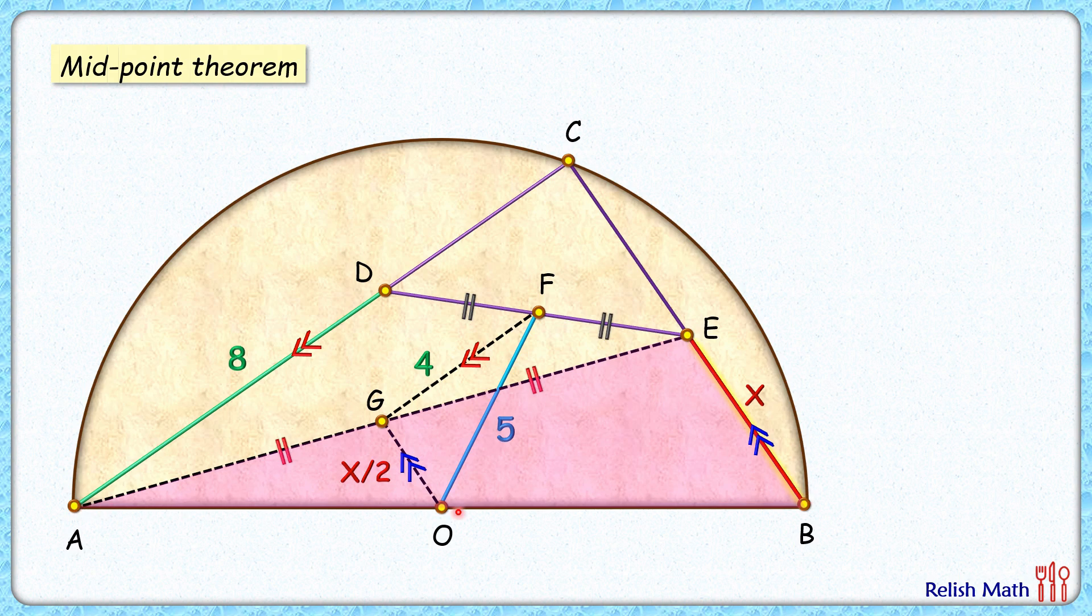Again, now if we take AB as the diameter, diameter we know in a circle always subtends an angle of 90 degrees, so angle at point C is 90 degrees. By theorem, if we draw lines parallel to two sets of lines—here we have AC and BC, and we are drawing lines parallel to them as FG and OG—then the angle between the original lines and angle between the parallel lines will be the same.